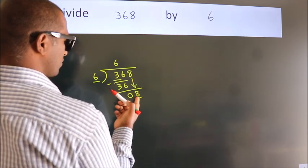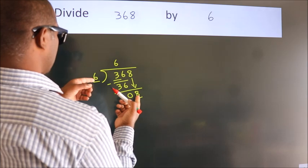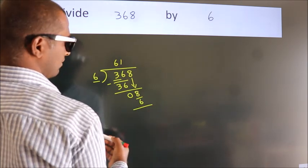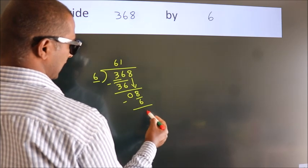A number close to 8 in the 6 table is 6 times 1, which is 6. Now we subtract; we get 2.